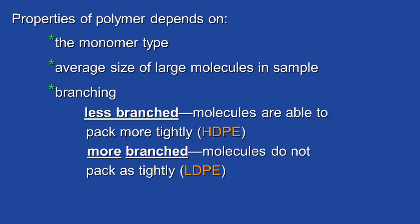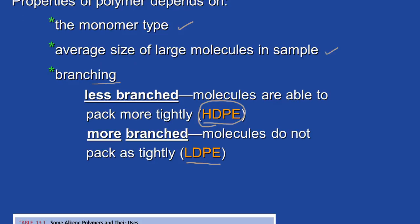The properties of a particular polymer are going to depend on: number one, the monomer type; the average size of large molecules in a sample — so we don't talk about molecular weight when referring to a polymer, we talk about an average molecular weight; and also the branching in a polymer. A less-branched polymer means the molecules would be able to pack more tightly — we refer to that as HDPE, or high-density polyethylene. The more branched the molecules are, the less tightly they pack, and that results in a low-density polyethylene.